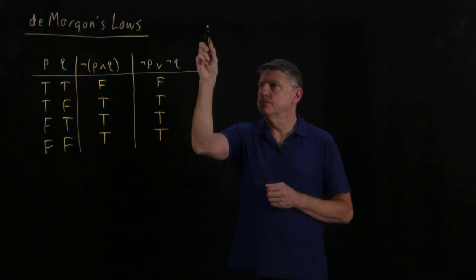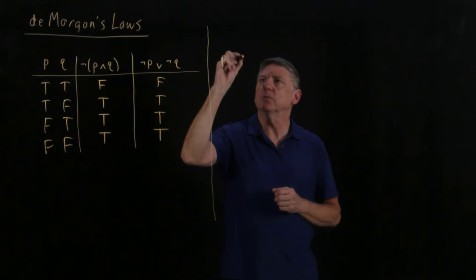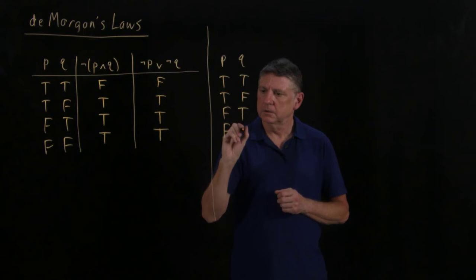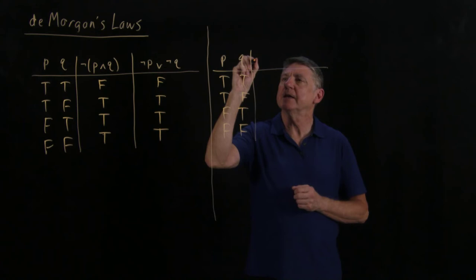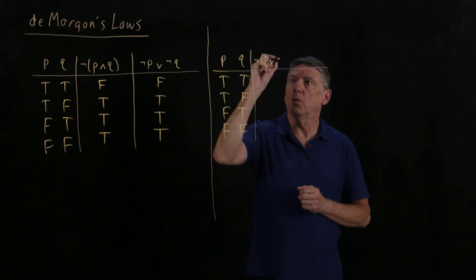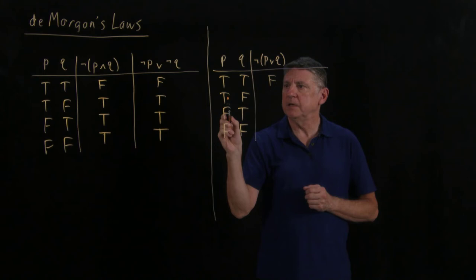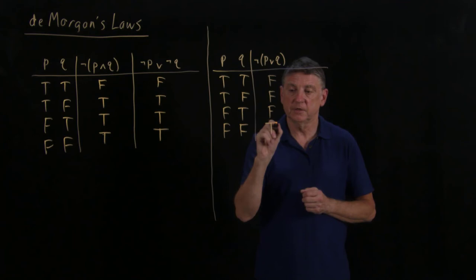As I alluded to, there are multiple De Morgan's laws. A different form is essentially to negate each of these. Let's write down our truth table and explore. Suppose we take this conjunction and turn it into a disjunction — the formula we're interested in is not (p or q). When p or q is true, its negation is false; this holds for the first three rows. When p or q is false, its negation is true — that's the last row.